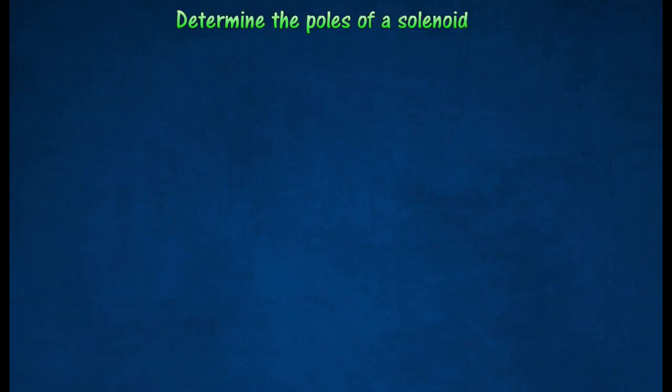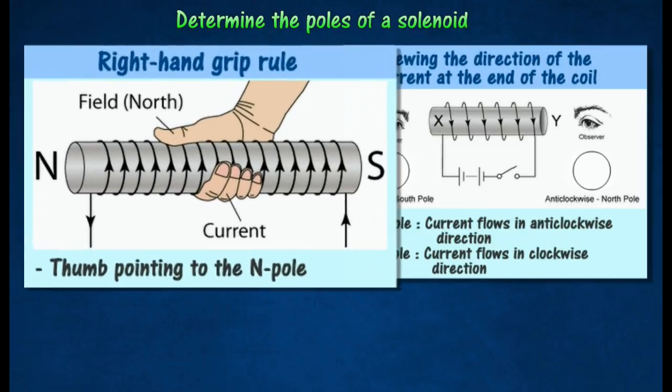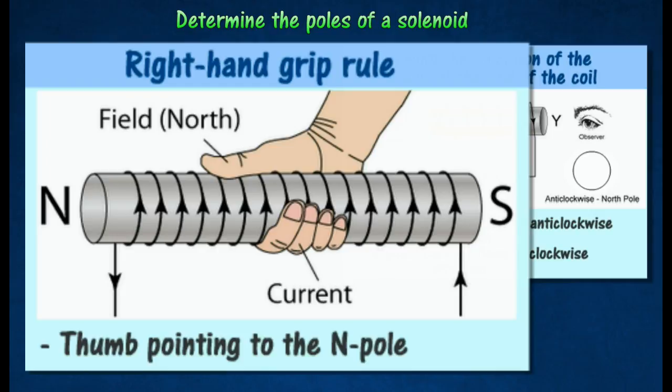Methods to determine the poles of a solenoid. According to the Right Hand Grip Rule, the thumb points to the north pole if the fingers of the right hand grip the solenoid in the direction of the current.